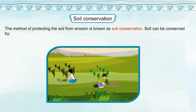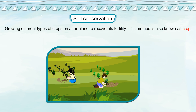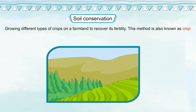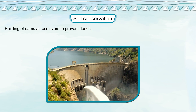Soil can be conserved by planting more trees in forest areas to replace the ones that are cut down. Growing different types of crops on a farmland to recover its fertility — this method is also known as crop rotation. Building dams across rivers to prevent floods.